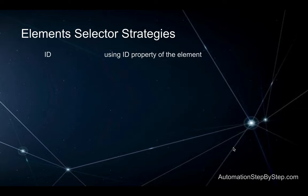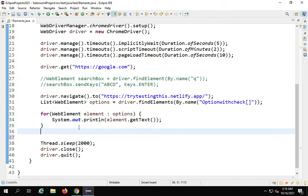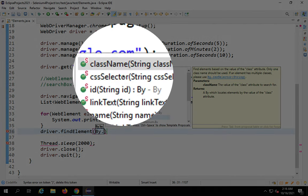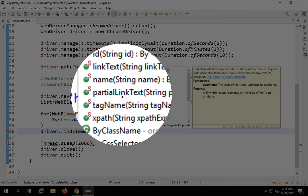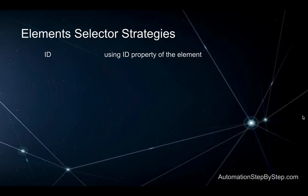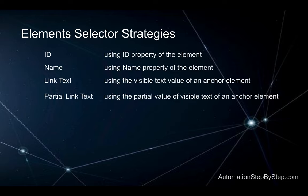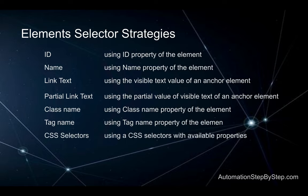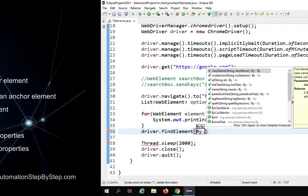Now let's learn some element locator strategies. There are multiple strategies you can use in Selenium. Whenever you say driver.findElement or findElements and then By dot, you can see all the options: class name, CSS selector, ID, link text, partial link text, name, XPath, etc. All these are selector strategies. Use ID if you have a unique and consistent ID available — this is the best locator. You can also use name, link text, partial link text, class name, tag name, CSS selectors, or XPath.